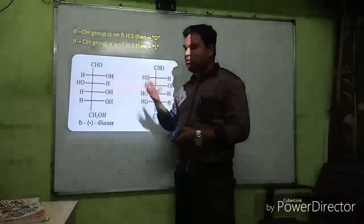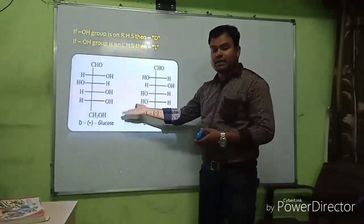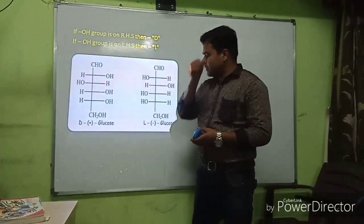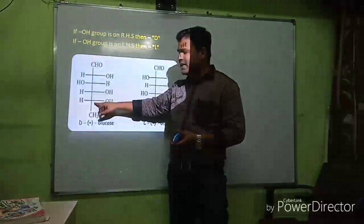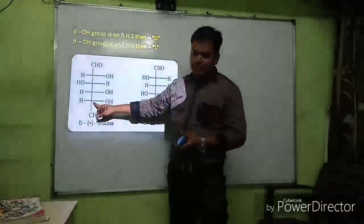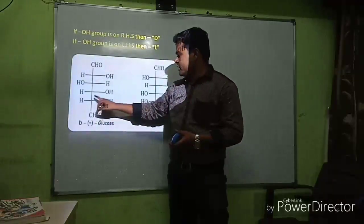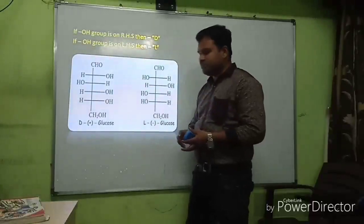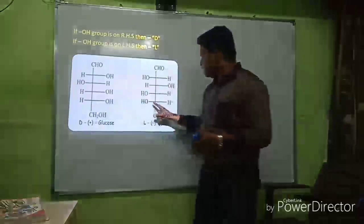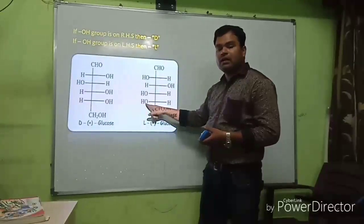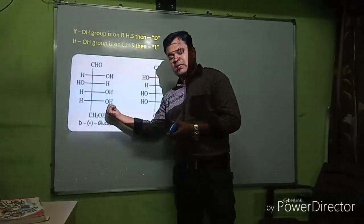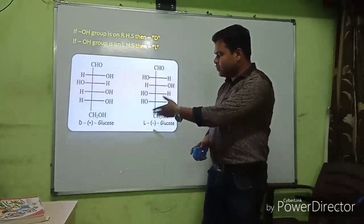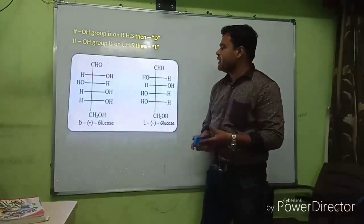To distinguish D and L in glucose, which has four chiral carbon centers, we focus on the least (lowest) chiral carbon center. If the OH group on the least carbon center is on the right-hand side, it is D-glucose; if on the left-hand side, it is L-glucose. D-glucose and L-glucose are mirror images of each other.